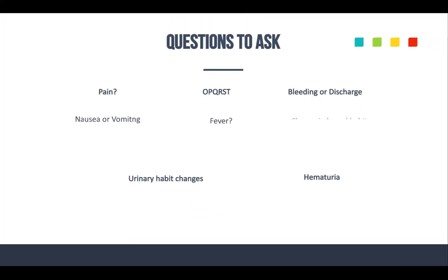Some of the questions you're going to want to ask patients having a suspected GYN emergency: ask them if there's pain or cramping, and of course get your OPQRST. Is there bleeding or discharge from the vagina? Is the patient nauseous? Is there vomiting? Maybe a change in appetite. Do they have a fever? Are they diaphoretic? Ask about any change in their bowel habits — constipated or diarrhea. Ask about urinary habits: pain with urination or blood in their urine. Ask about preexisting medical problems and any surgeries related to GYN issues.